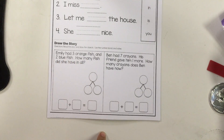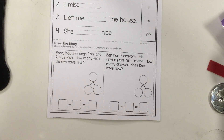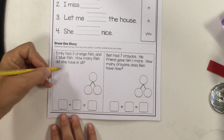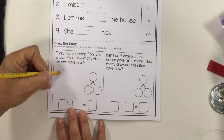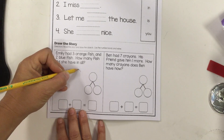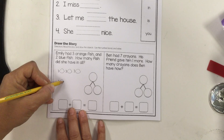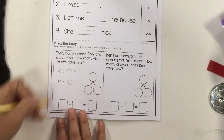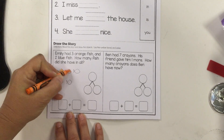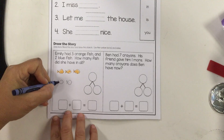It says Emily had three orange fish and two blue fish. How many fish did she have in all? I'm going to go ahead and draw those fish. We normally draw just dots, but these are kind of easy, so I'm just going to draw some very simple looking fish. There are my two blue fish, and then I'm going to color them — they're orange and blue.